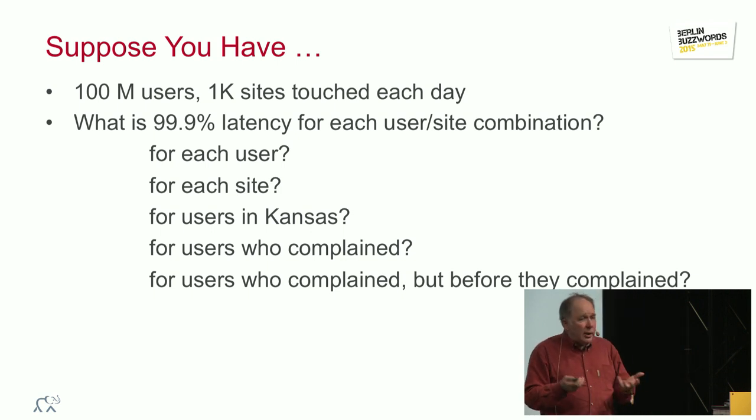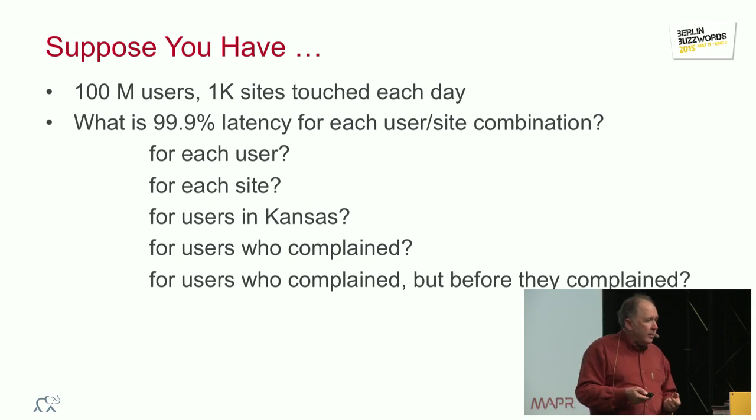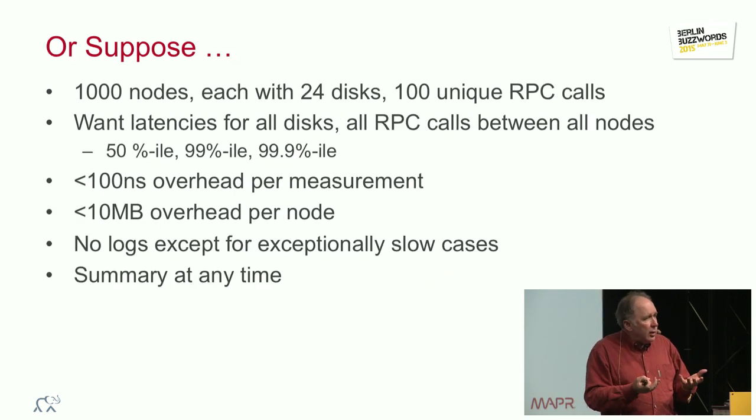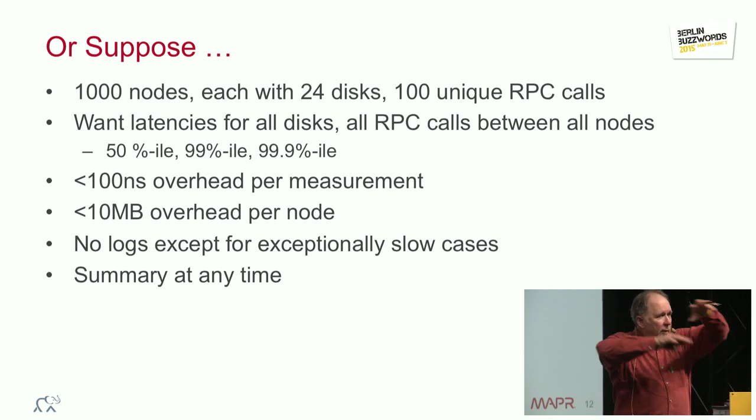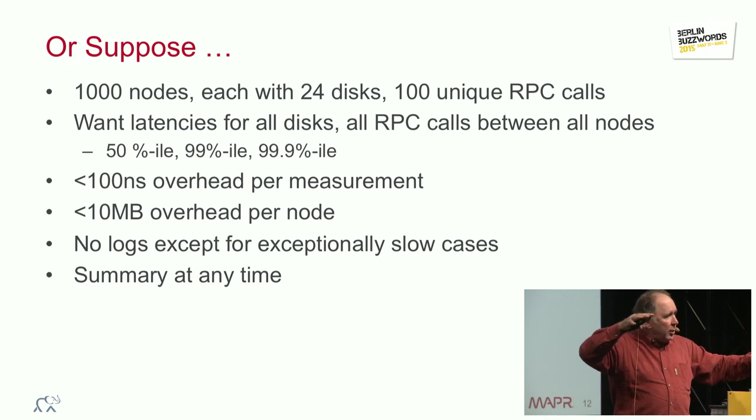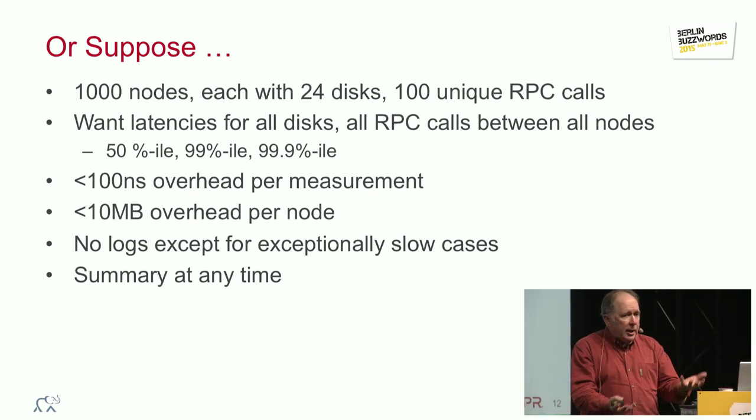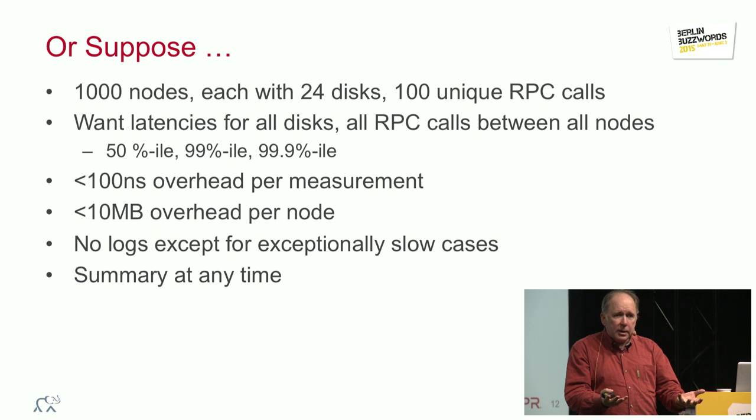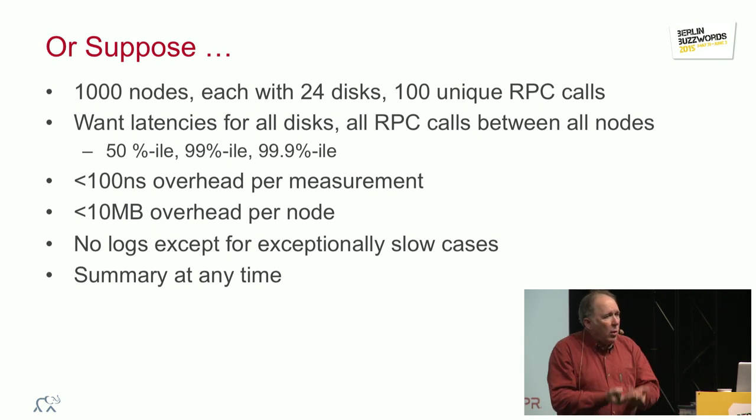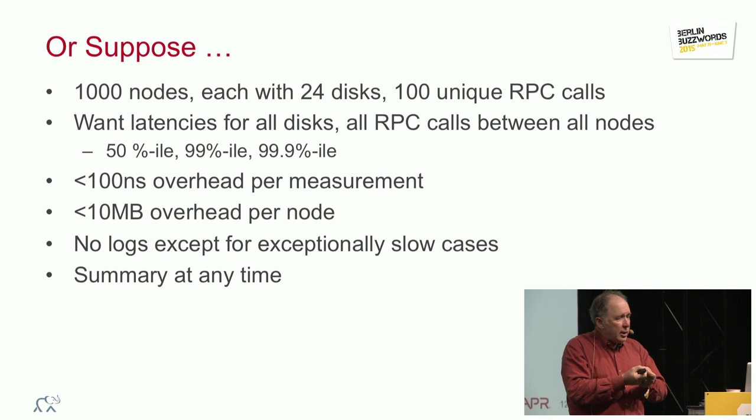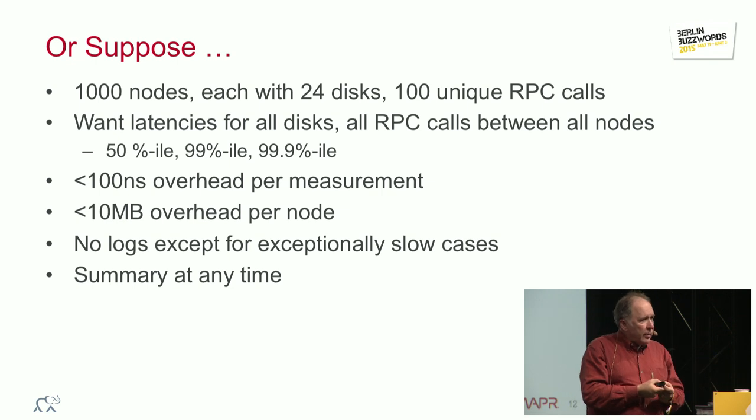Say the 99.99 percentile latency. But we have 100 million people, and say each one of those goes to 1,000 websites per day, so we've got billions of measurements per day. We want to have online results for any kind of subset, like how did people in Kansas get results? How about the people who complained yesterday, but not the day before? How can we compare what they saw? What were the worst cases that they saw?